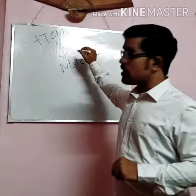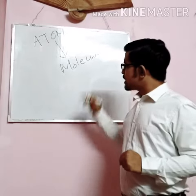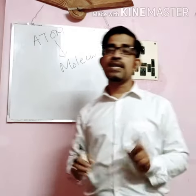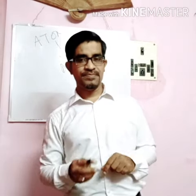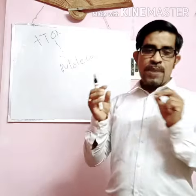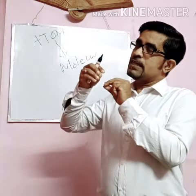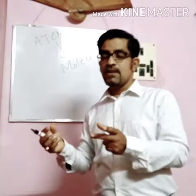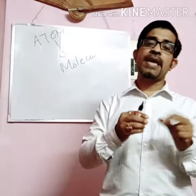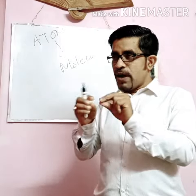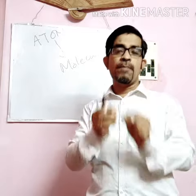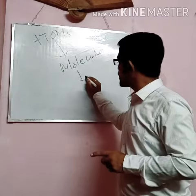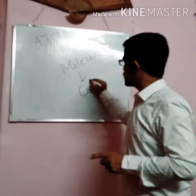From atoms we get the molecule. These different molecules may have different structures, different types of properties or different types of characteristics. So these different types of molecules will combine together and ultimately from these we are going to get the first living structure, that is called a cell.